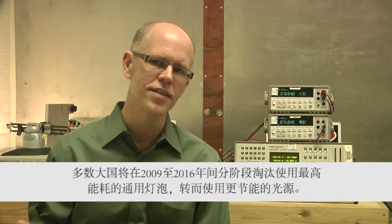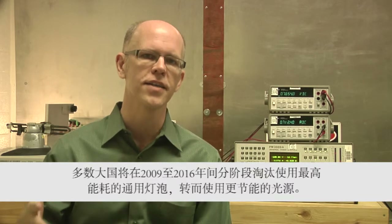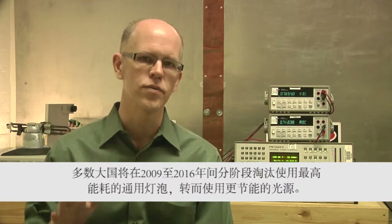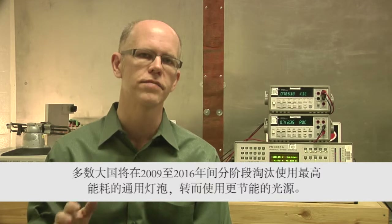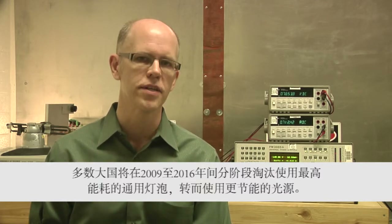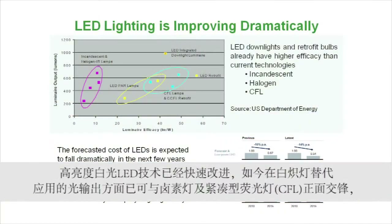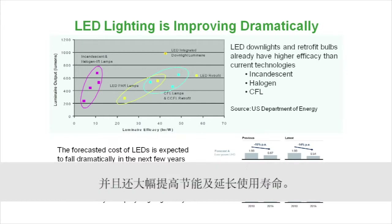Between 2009 and 2016, most large countries will phase out the use of the most inefficient general service lamps in favor of more efficient lighting sources. High-brightness white LED technology has improved rapidly and can now compete head-to-head with halogen and CFL lamps in terms of light output for incandescent lighting applications, while offering dramatically improved energy savings and lifetime.